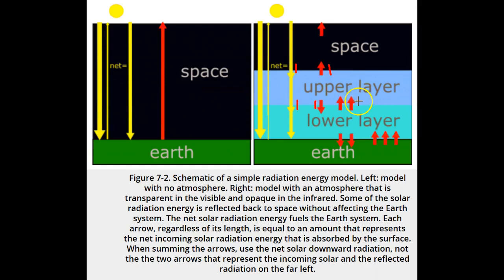That puts two down arrows at the interface between the upper layer and the lower layer. To balance these two, the lower layer must be emitting two infrared arrows up.